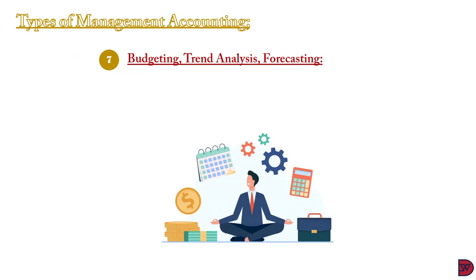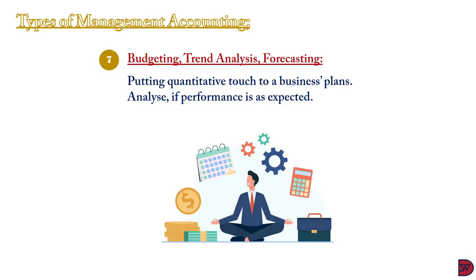Last but not least, budgeting, trend analysis, and forecasting. Budgets are quantitative expressions of a business's plan. Management accountants utilize performance reports to note deviations of actual results from budgeted ones, and necessary interventions are made before it becomes too late. With trend analysis, a pattern of events can be identified to help a business focus on future events and prepare accordingly.